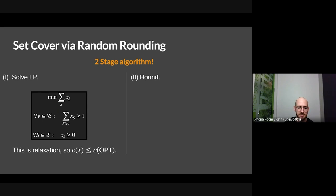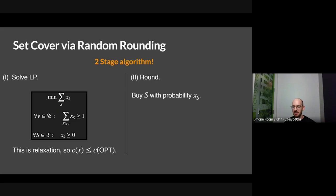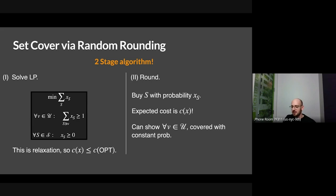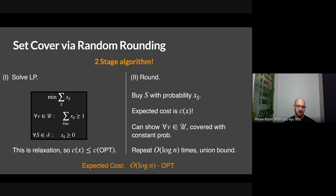We know how to solve LPs. This is a relaxation to the true integer problem, so the value of the LP is less than OPT. Second, we need to round this to a legit combinatorial solution. The natural way is to treat x_s as the probability of sampling set S, and sample every set with probability equal to its LP value. The expected cost is the value of the LP. You cover every element with constant probability, and if you boost by log n, you can union bound over elements to get feasibility with high probability. This classic algorithm has cost OPT times log n.